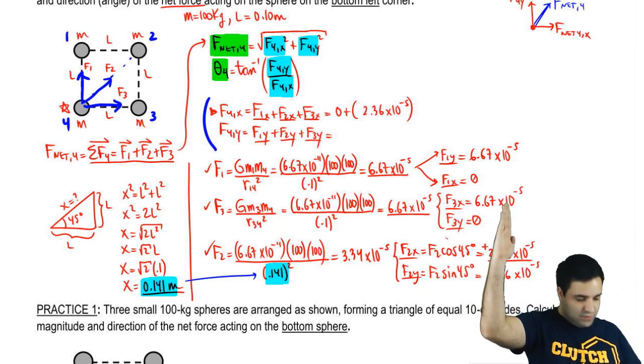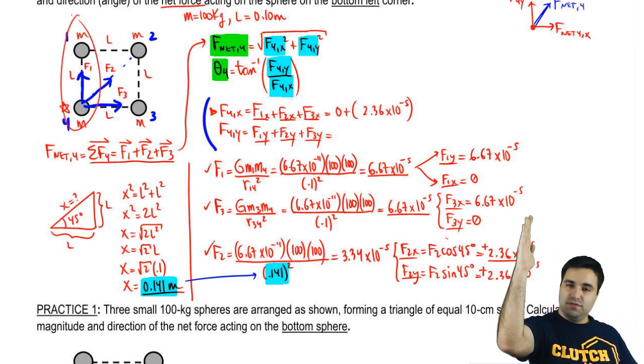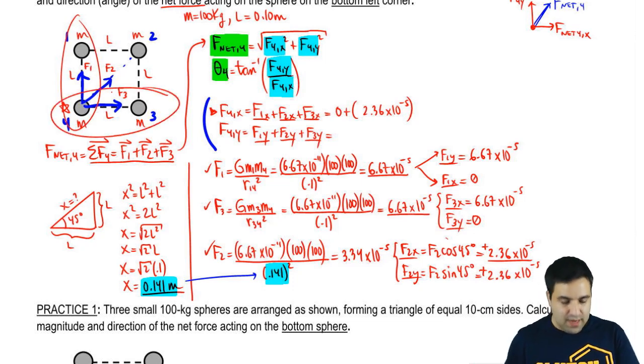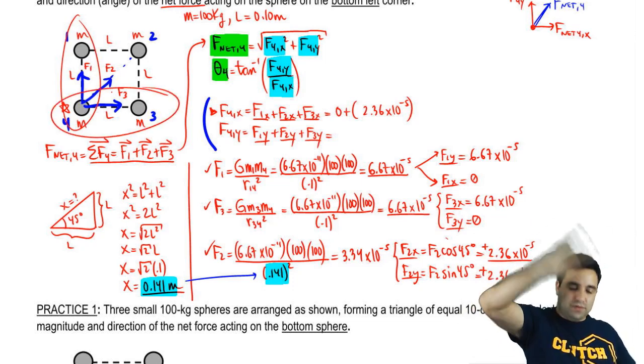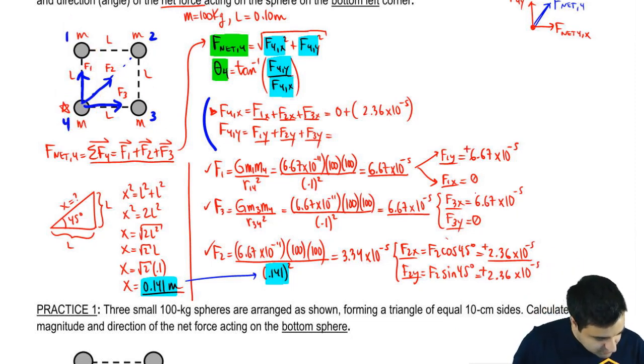So F2X is positive. F2Y is positive as well. In fact, all these numbers are positive. F1 over here, Y is a positive. And F3X is a positive. All the numbers are up or to the right. So they're all going to be positive, which is nice. Plus F3X. F3X is right here. So 6.67 times 10 to the negative 5th.